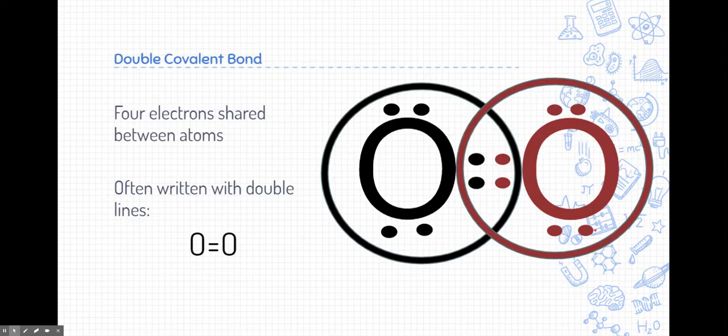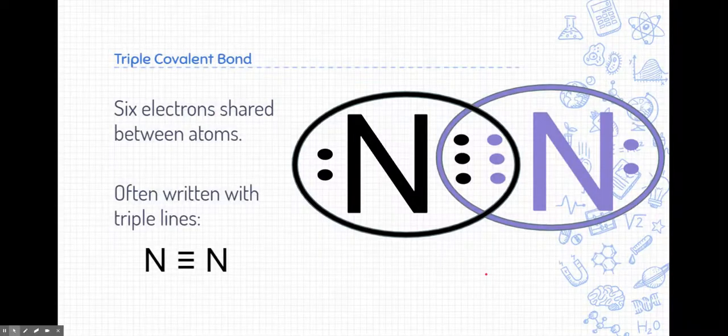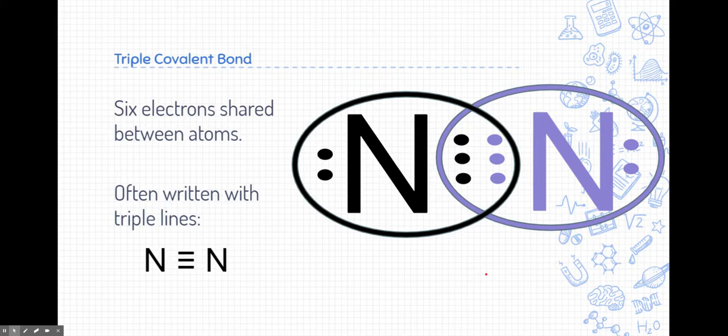There can also be double covalent bonds. Here we have two oxygen atoms sharing four electrons, so that's two sets of two. So often we write those with double lines between them. Yes, we can even go to triple bonds. Here's nitrogens, two nitrogens sharing six electrons between them, so three sets of double electrons. So we often write those with three lines or triple lines between the elements.